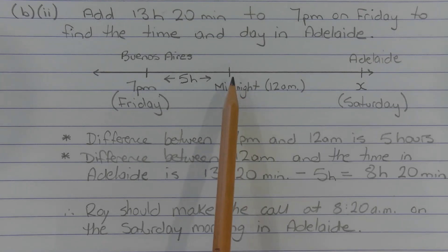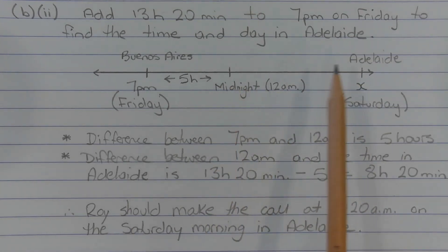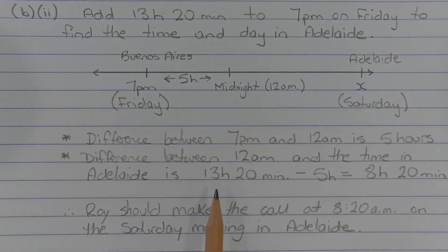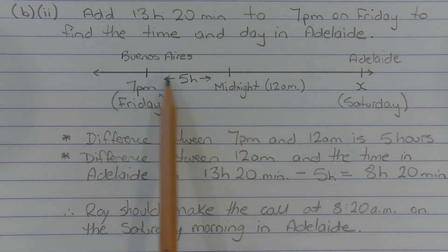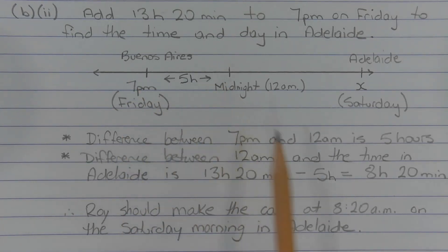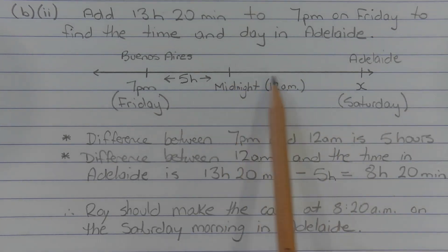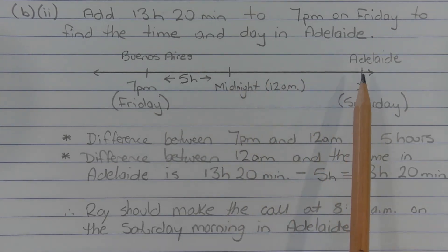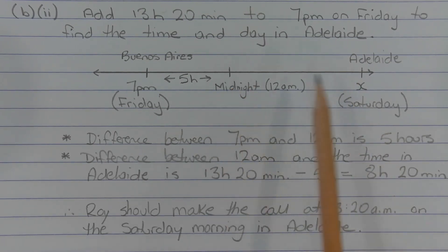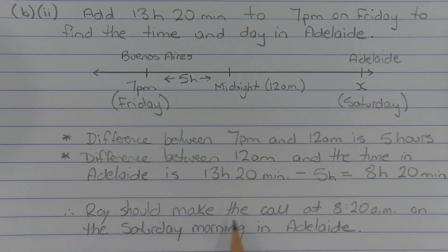To find the remaining gap — the difference between midnight and the time in Adelaide — we take 13 hours and 20 minutes and subtract the 5 hours we just found, which gives 8 hours and 20 minutes. This represents the time difference between midnight and the time in Adelaide. Therefore, Roy should make the call at 8:20am on Saturday morning in Adelaide.